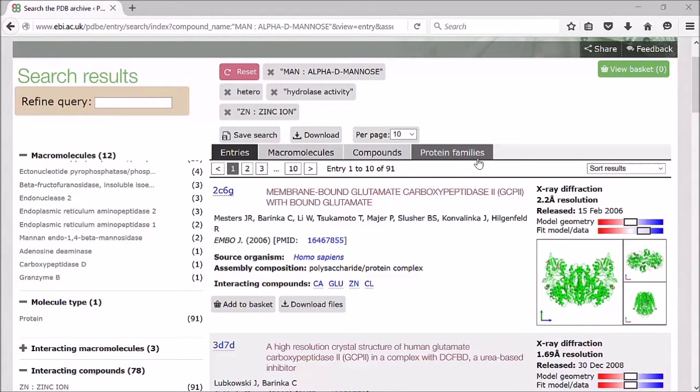I'll begin to talk firstly about our entries view. You can see here they're listed by individual ID code, individual entry. In this case, entry 2C6G. You have some information shown initially on the publication details, the organism and assembly, and also some interacting ligands.